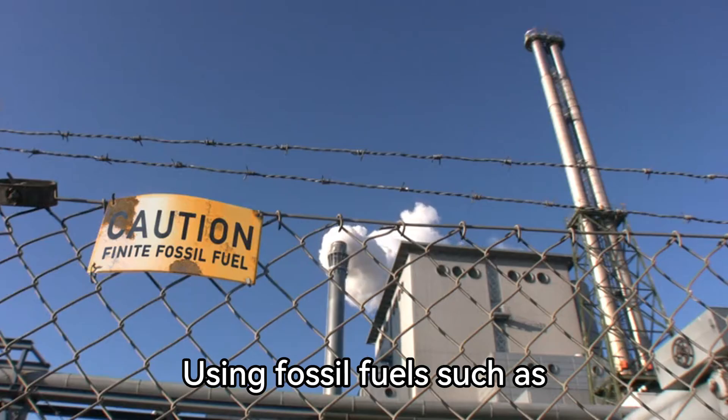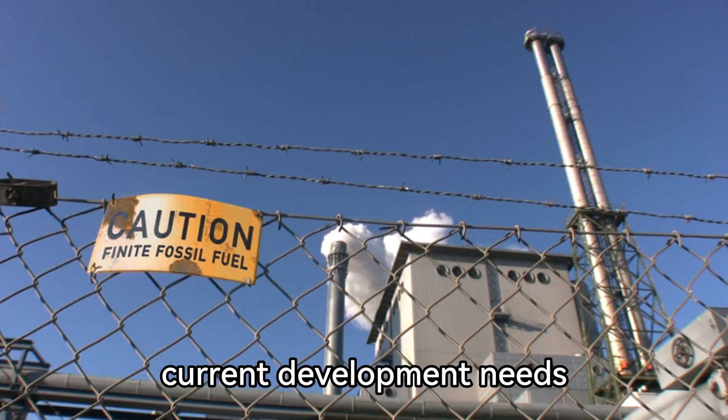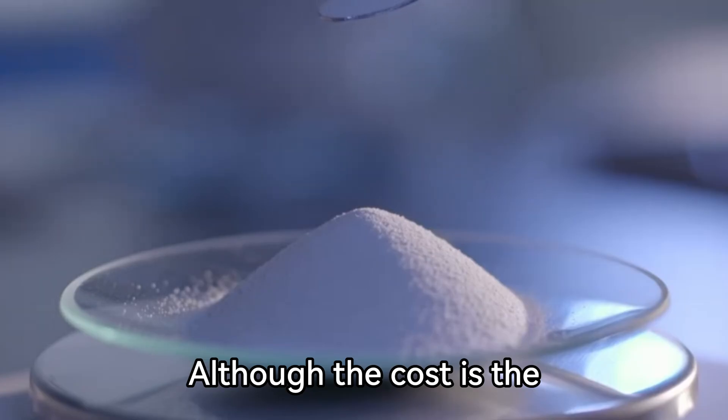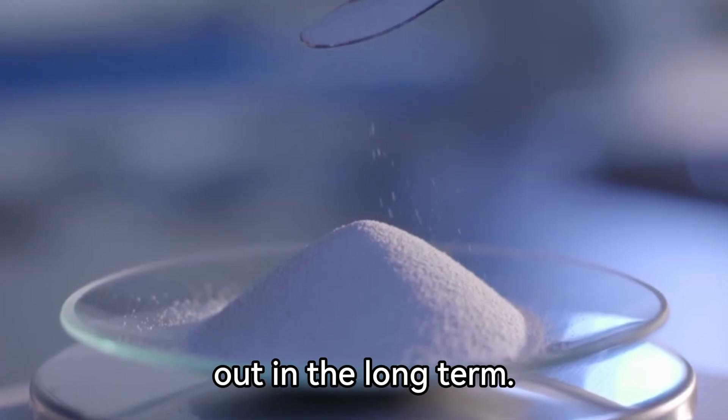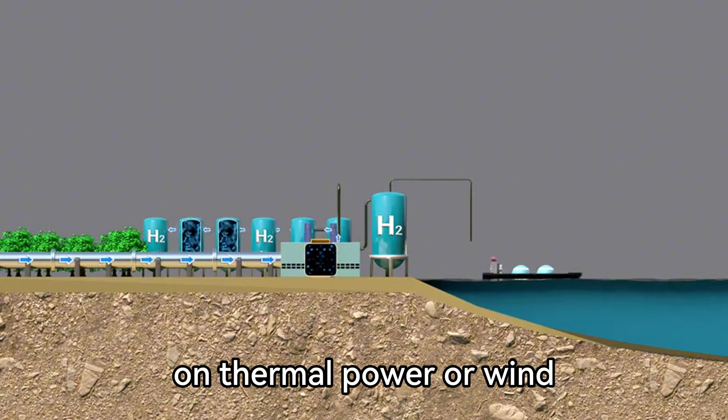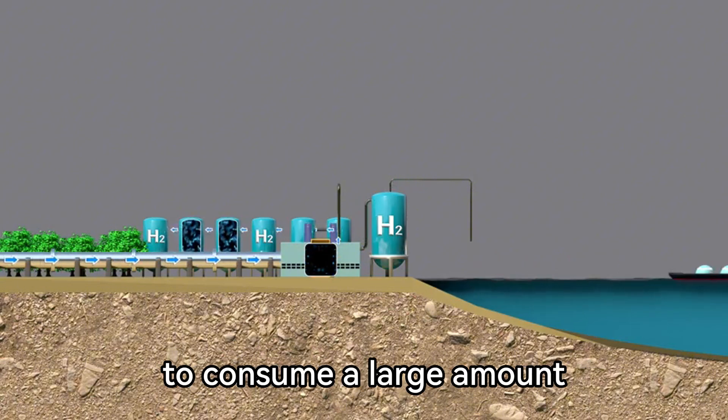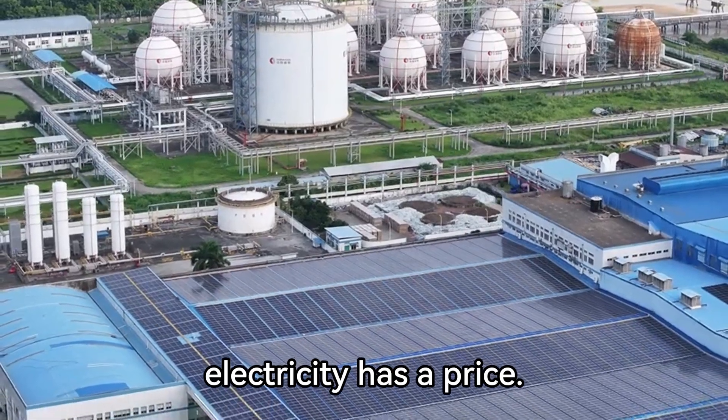Using fossil fuels, such as natural gas, to produce hydrogen does not meet the current development needs because it consumes non-renewable energy. Although the cost is the cheapest at present, it will gradually be phased out in the long term. Electrolytic water hydrogen production, whether based on thermal power or wind and solar power, is bound to consume a large amount of energy during the production process, and electricity has a price.